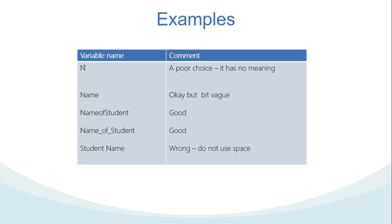For example, like this: 'N'. It's fine to write your variable with N, however it is a poor choice. One, it has no meaning. Another one, when you work as a team programmer, it will be difficult for other members to understand what the N is. Another choice is like this: 'name'. It is okay but a bit vague. The better option is 'NameOfStudent' or 'Name_of_Student' because it has the same meaning. Another example: 'Student Name' with a space. This is wrong because you are not allowed to use space.